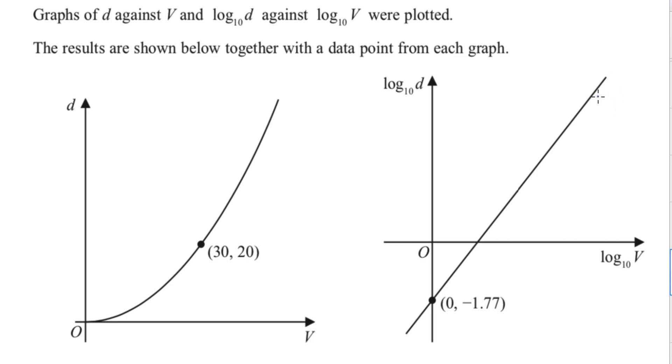When it produces a straight line, that suggests that we've got a good model. The fact that this is a good model means we can work out the relationship that's going on that actually links d and v together.